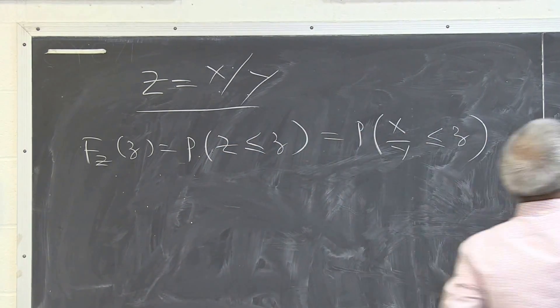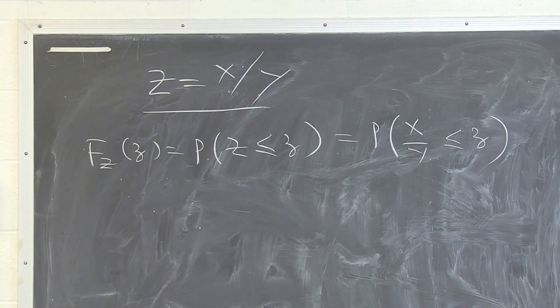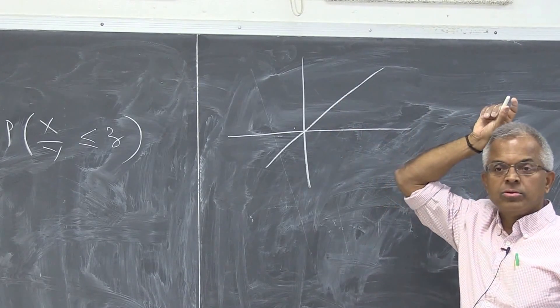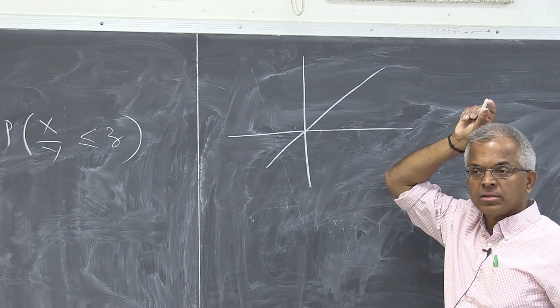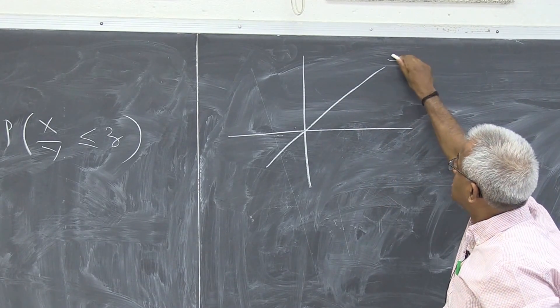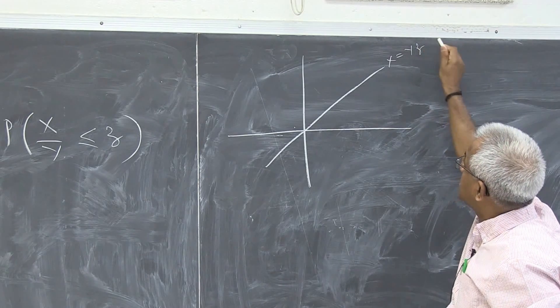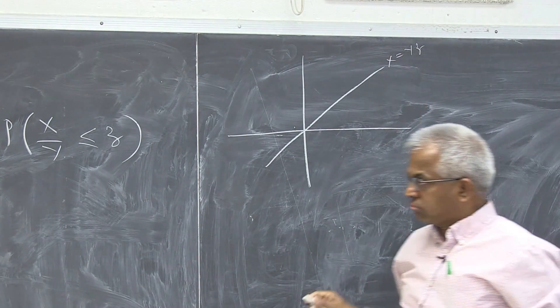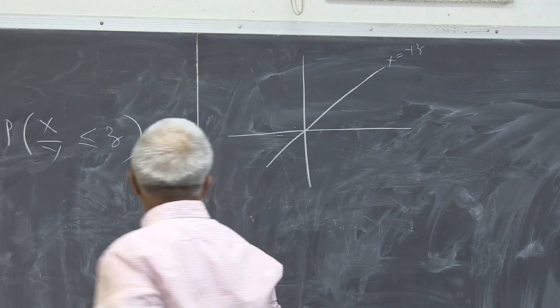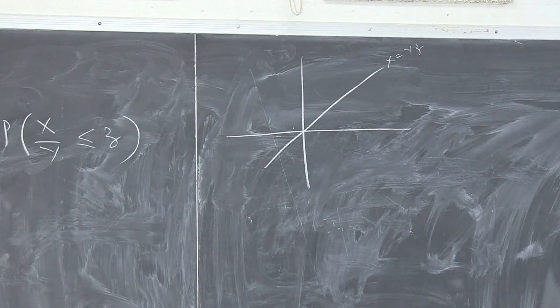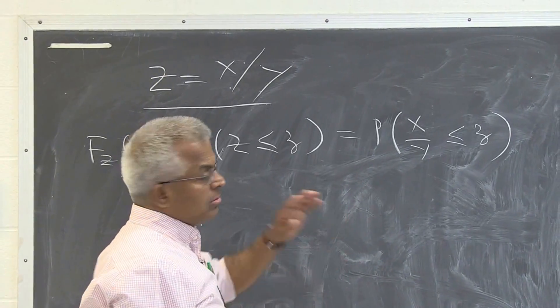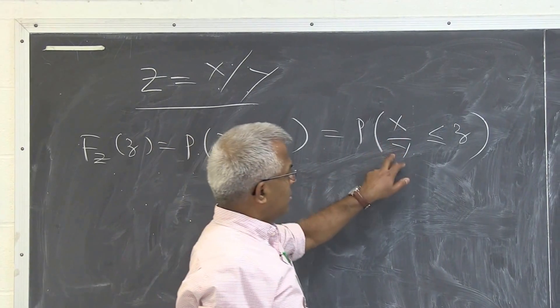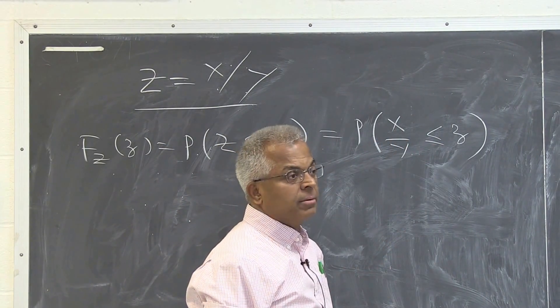So first of all, this is the line x equal to yz, right? This is the line x equal to yz. So we have, because it is easier to deal with x equal to y.